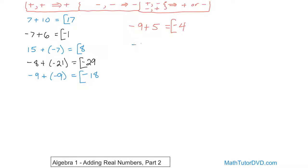What if we have negative 17 plus 20? Again, we're adding a negative and a positive, so you just subtract the numbers — the larger minus the smaller, ignoring any sign. So 20 minus 17 is three, and then we figure out the sign. Positive 20 has the bigger absolute value than negative 17, so the answer is positive three.